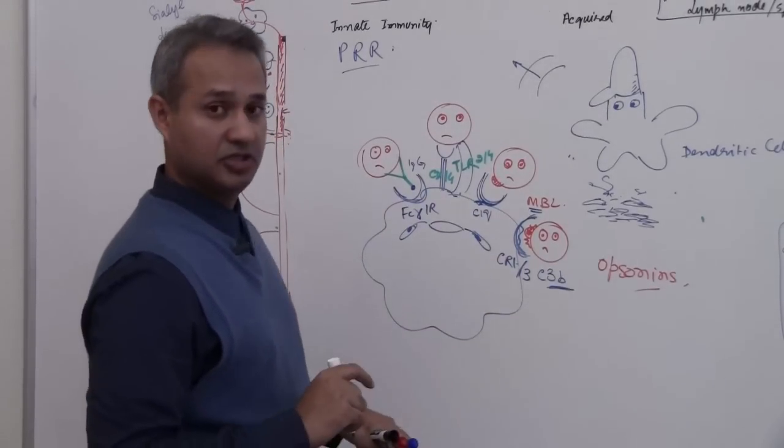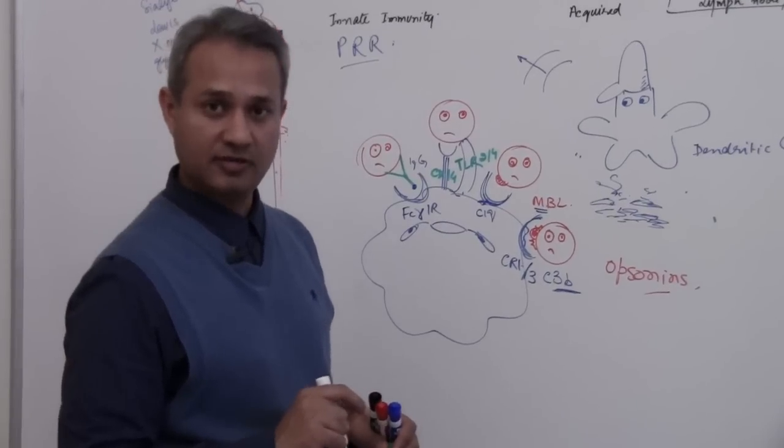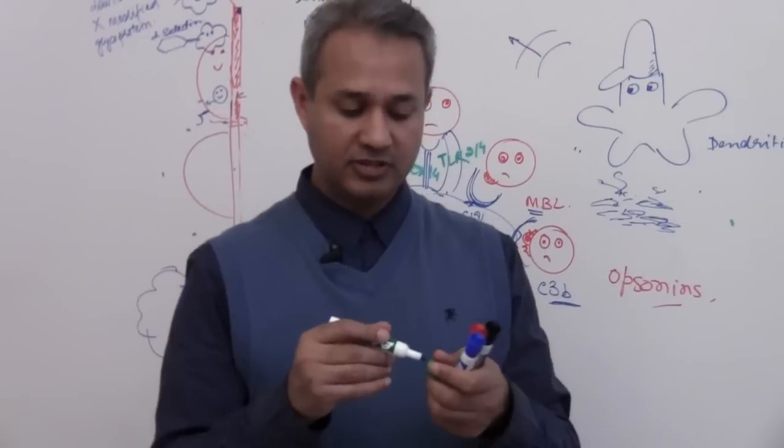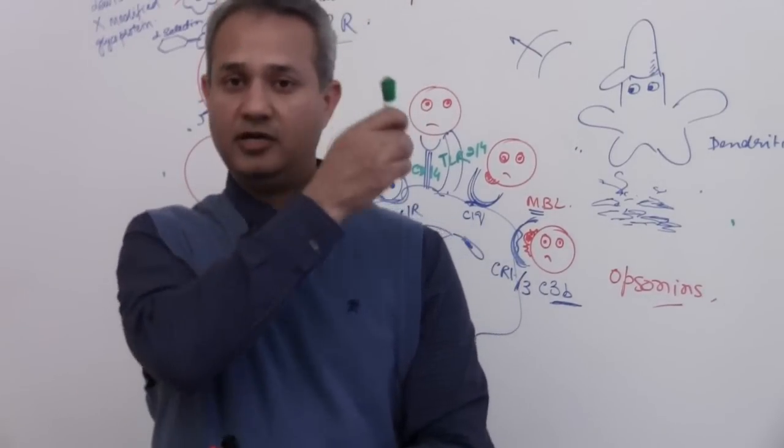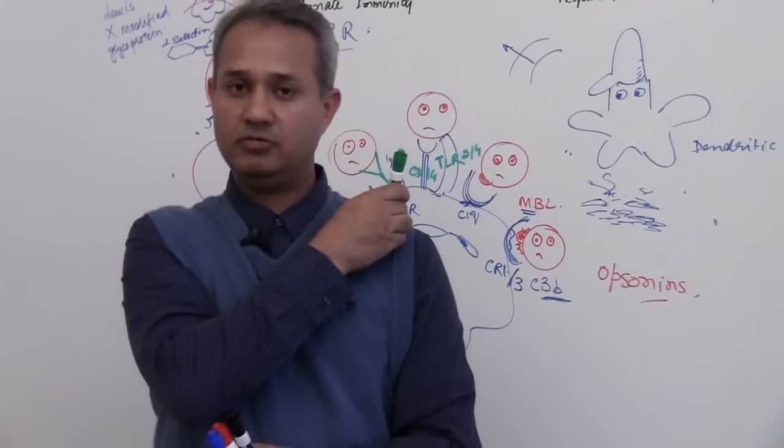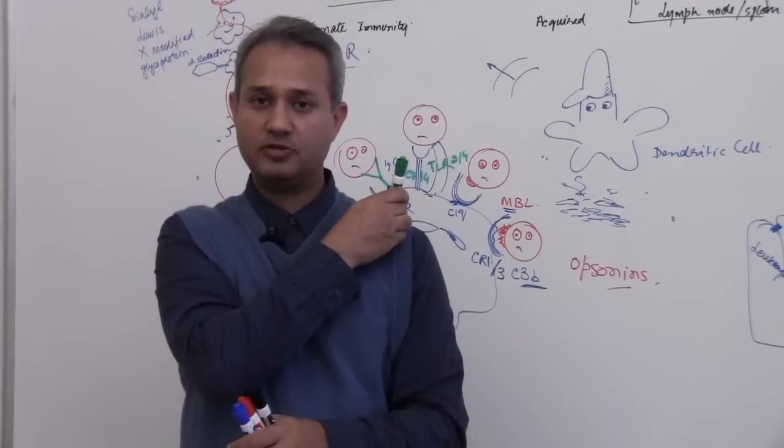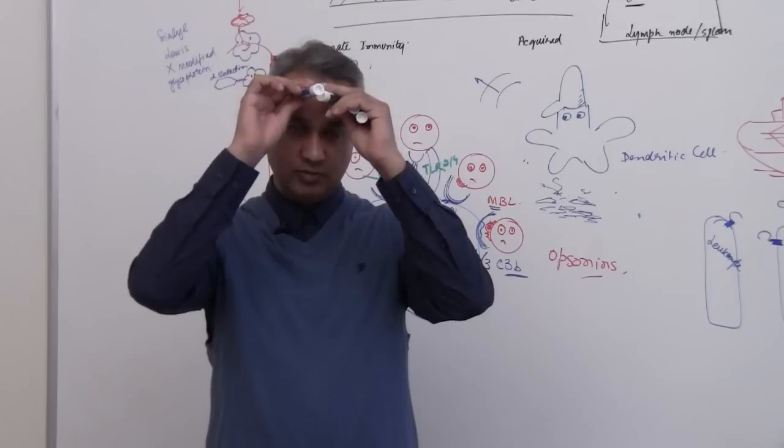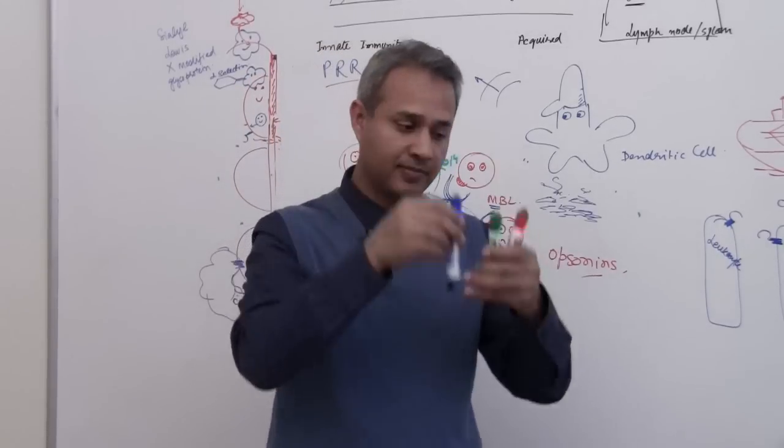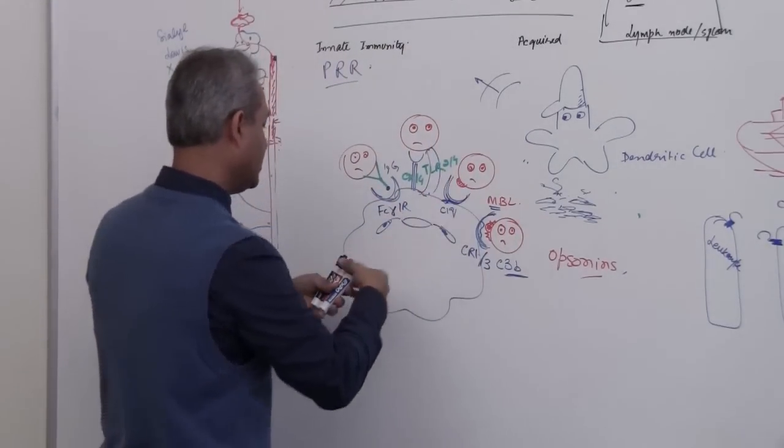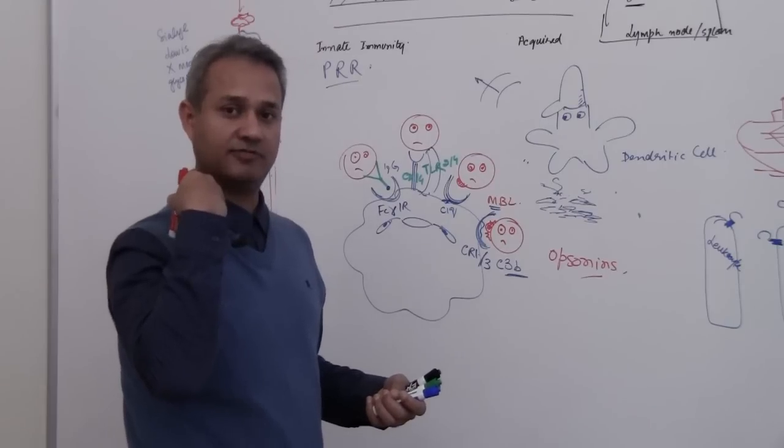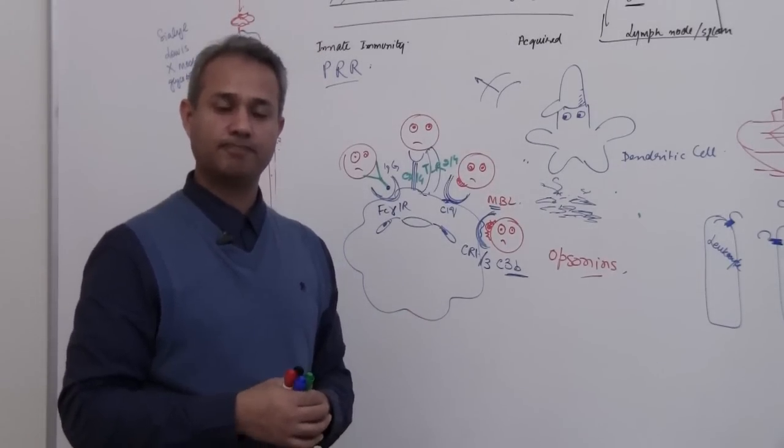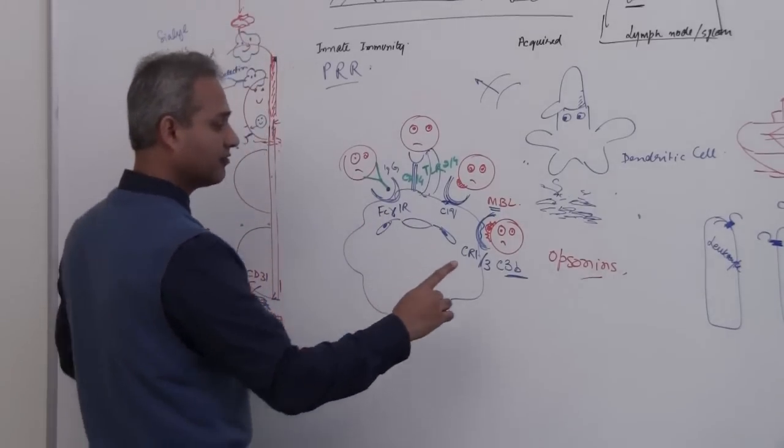Then there is indirect recognition. There is opsonization. What does that mean? That these pathogen who was running around happy and all of a sudden complement comes and sits on them and pathogen says oh, I know what is happening to me. Then IgG comes and sits on the surface and pathogen says well, I know what is happening. And then mannose binding lectin comes and sits on the surface. So pathogen is now all coated with fun proteins.